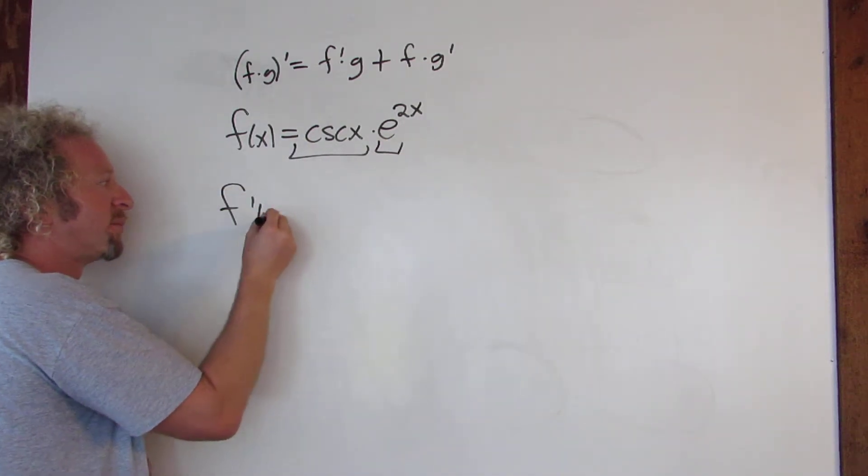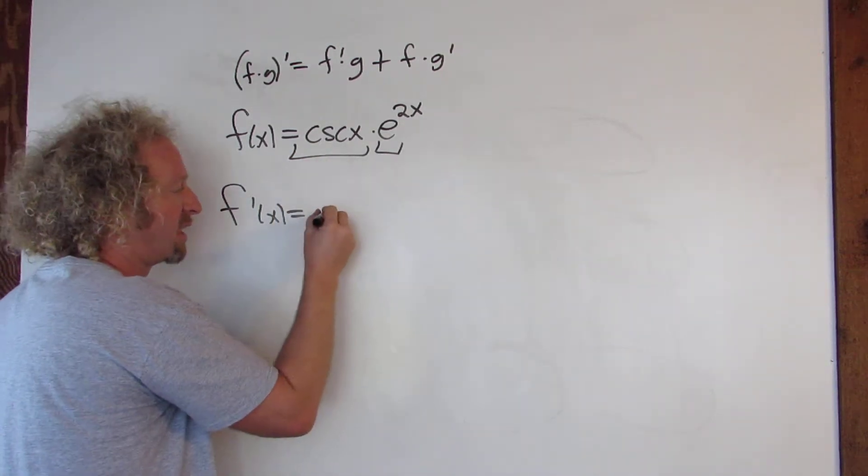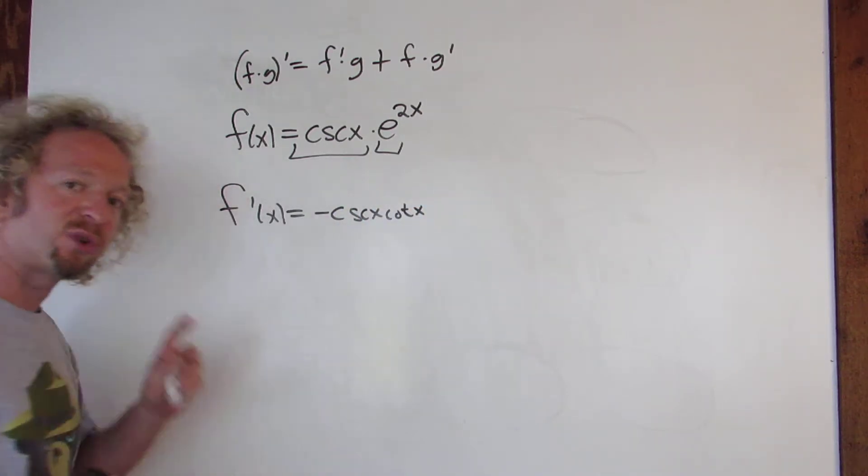So we're going to take the derivative now. Alright, so it's the derivative of the first. The derivative of cosecant is negative cosecant cotangent. That's the derivative of the first one.